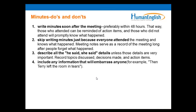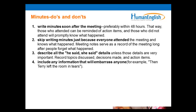Number four: include any information that will embarrass anyone — for example, 'Terry left the room in tears.' Olga, Gunther, and Oksana say 'don't' — of course, it's not a good idea to include information that will embarrass anyone. We can keep that out of the minutes.